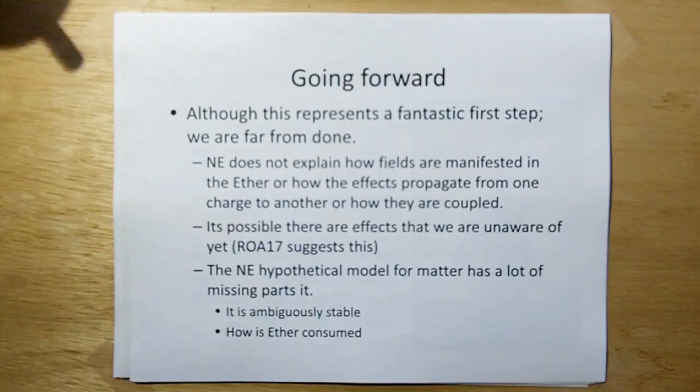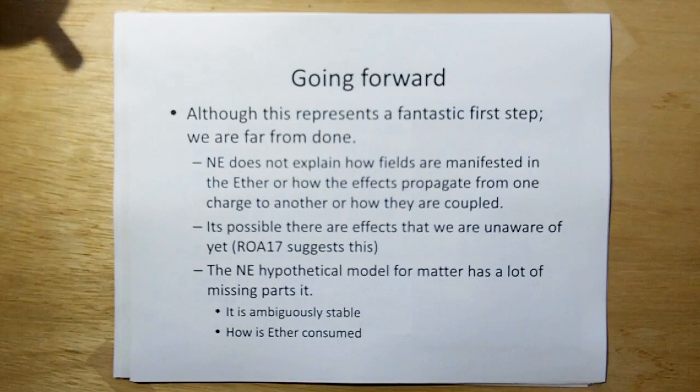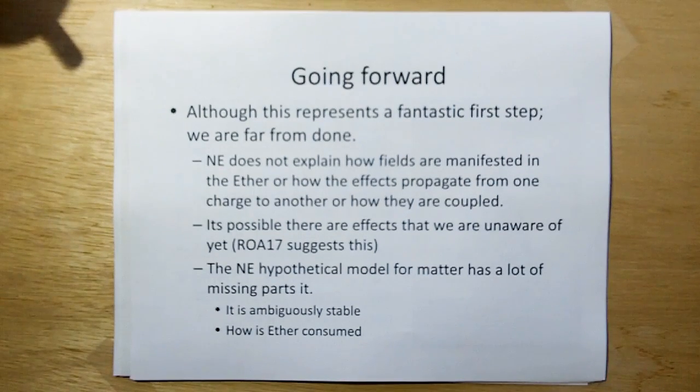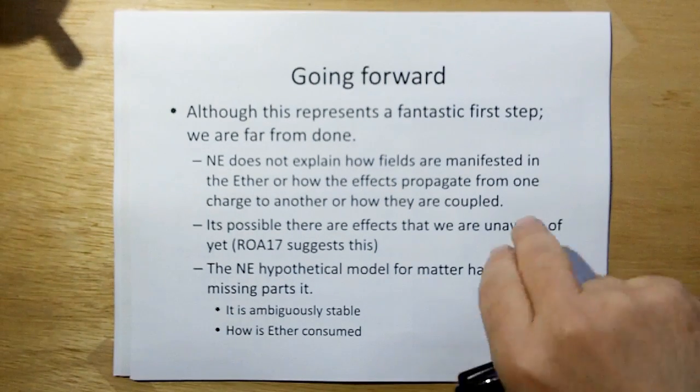So going forward, although this represents a fantastic step forward, we are far from done. New electromagnetism does not explain how fields are manifested in the ether or how the effects propagate from one charge to another or how they were coupled. It's possible there are effects that we are unaware of yet. Rule of Acquisition 17 suggests there is. The new electromagnetism hypothetical model for matter has lots of missing parts to it. Why is it ambiguously stable? How is ether consumed? These aren't explained in the models. So we've got a good first step, but there's lots to go.